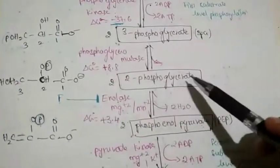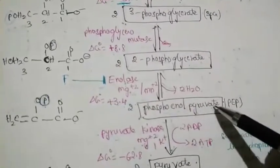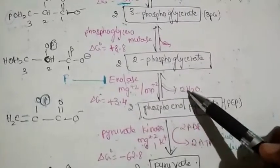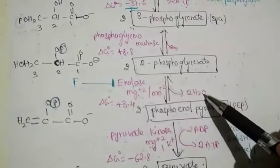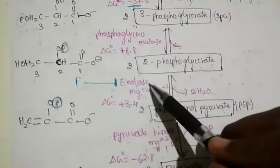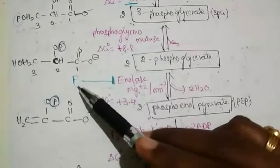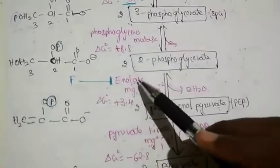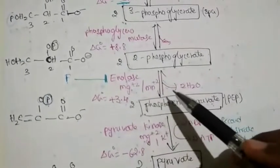In the ninth step, two molecules of 2-phosphoglycerate are converted into phosphoenolpyruvate by releasing two water molecules. The enzyme involved in this reaction is enolase. Enolase is inhibited by fluoride molecules. For the proper function of enolase, magnesium ions or manganese ions are required.